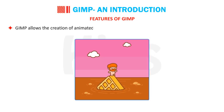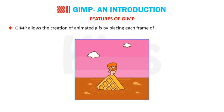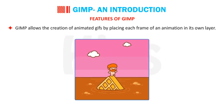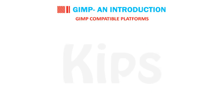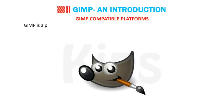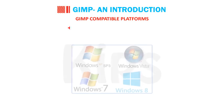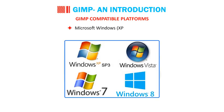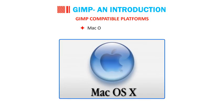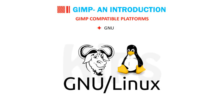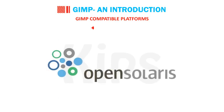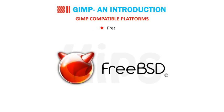GIMP allows the creation of animated GIFs by placing each frame of an animation in its own layer. GIMP is a portable application software supported by a number of operating systems including Microsoft Windows XP SP3, Vista, 7, 8, Mac OS X 10.6 and newer, GNU/Linux, Sun OpenSolaris, and FreeBSD.